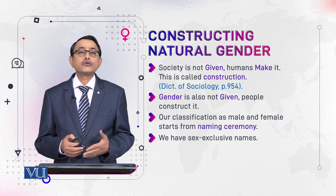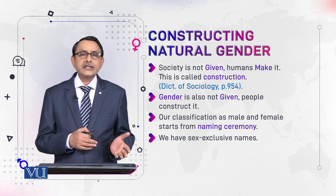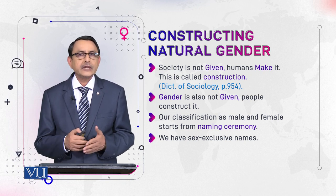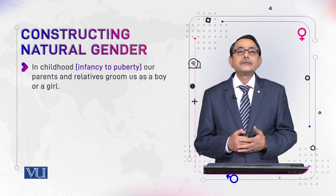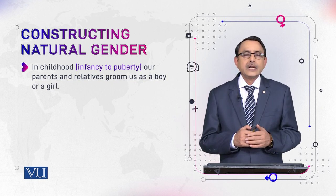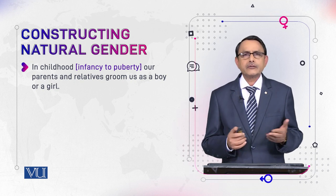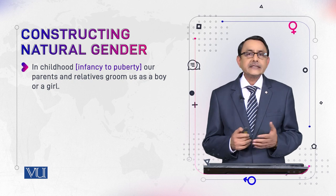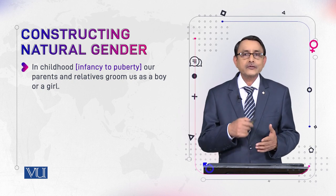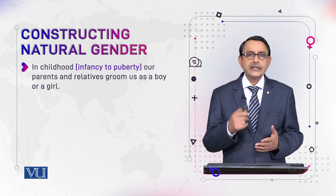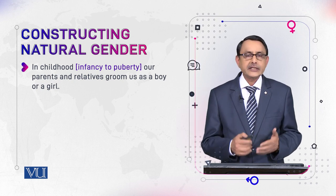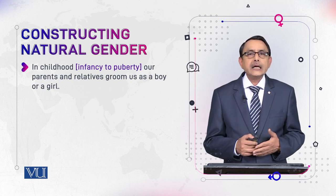We have sex-exclusive names — for girls we have separate names, for males we have separate names, and names are not interchanged for either sex. In childhood — infancy to puberty, roughly age 12 or 13 — our parents and relatives groom us as a boy or girl. First we are named, and second, in childhood, our grooming starts, done by our parents, elder siblings, and relatives.